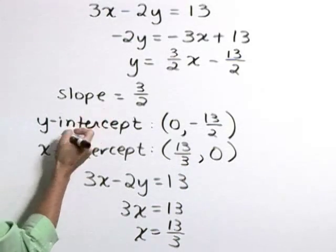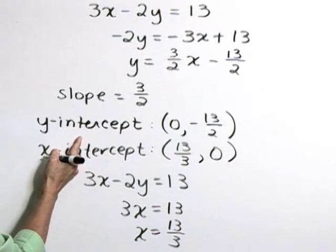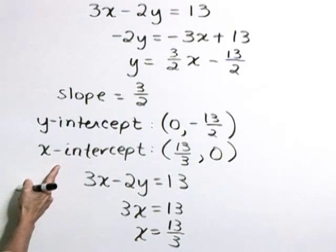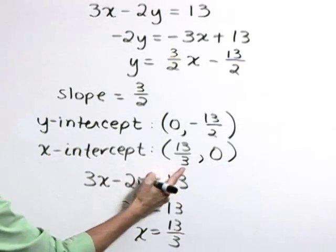This line has a slope of 3 halves, a y-intercept of 0, negative 13 halves, and an x-intercept of 13 thirds, 0.